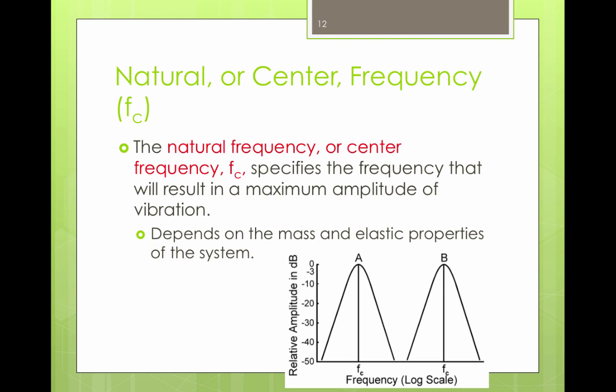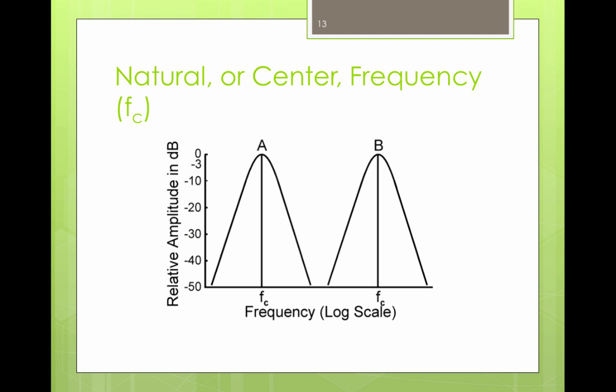So the natural frequency or the center frequency - I know we like to have a lot of names for things in hearing science - is the frequency that will result in the maximum amplitude of vibration. That depends again on the mass and the elasticity of the system. We have two curves here, curve A and curve B. They each have their own center frequency.